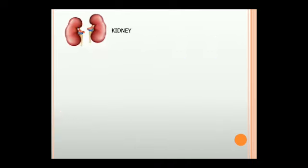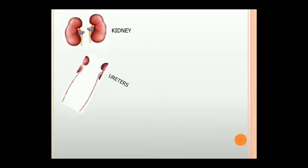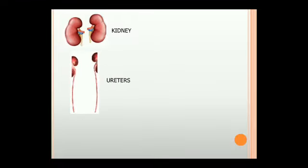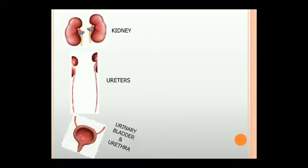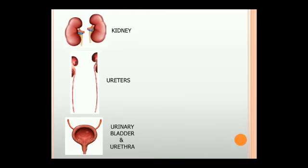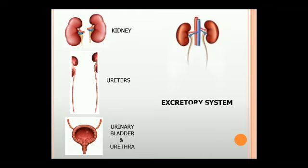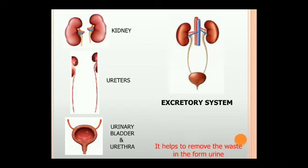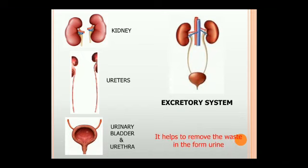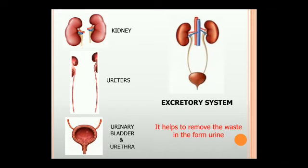Kidney, ureters, urinary bladder, and urethra make up the excretory system, which helps to remove waste in the form of urine.